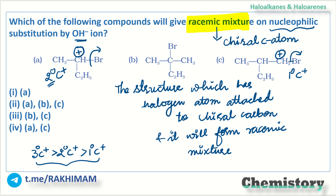First, let's identify where the chiral carbon atom is. This carbon atom here is a chiral carbon because all four species attached to it are different — its tetravalency is satisfied by four different groups. In option B, however, these two methyl groups are the same. So you might think the answer should be A or C, but let's be careful.